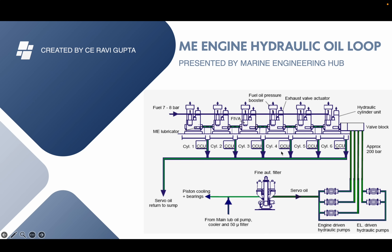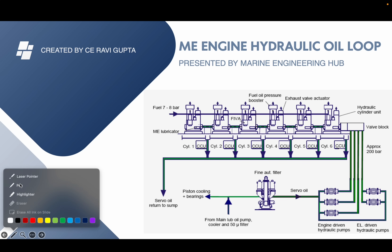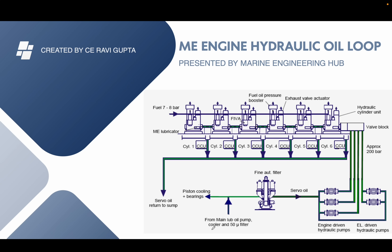Before talking about the Auxiliary Control Unit, first we need to understand how this hydraulic loop works. From the main lube oil pump, pressure is developed around 2 to 4 bar and that pressure is coming in. A part of it is going for piston cooling and bearing lubrication. A part of the oil is going to the auto backwash filter, which has a filtration unit of around 50 micron.